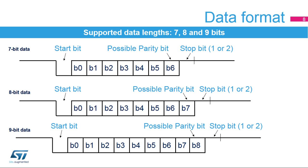A frame starts with one start bit, where the line is driven low for one bit period. This signals the start of a frame and is used for synchronisation. The data length can be nine, eight or seven bits, with the parity bit counted. Finally, one or two stop bits, where the line is driven high, indicate the end of the frame.